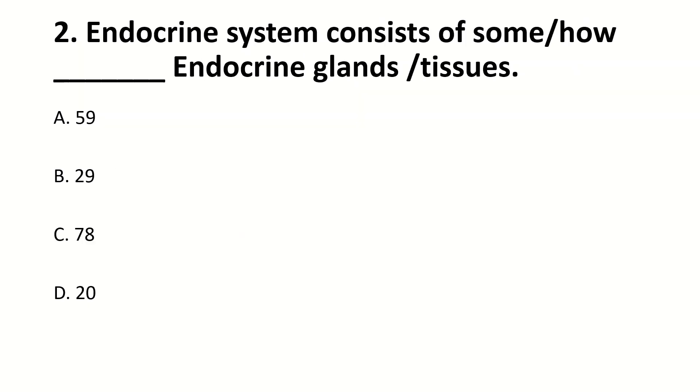The endocrine system consists of how many endocrine glands or tissues? The right answer is D: 20.